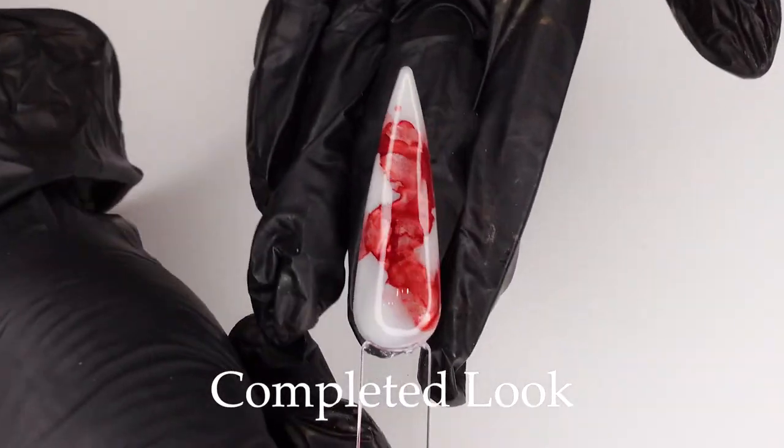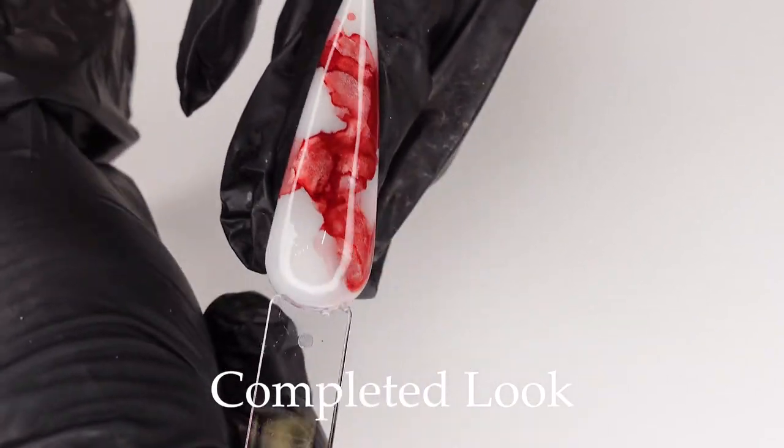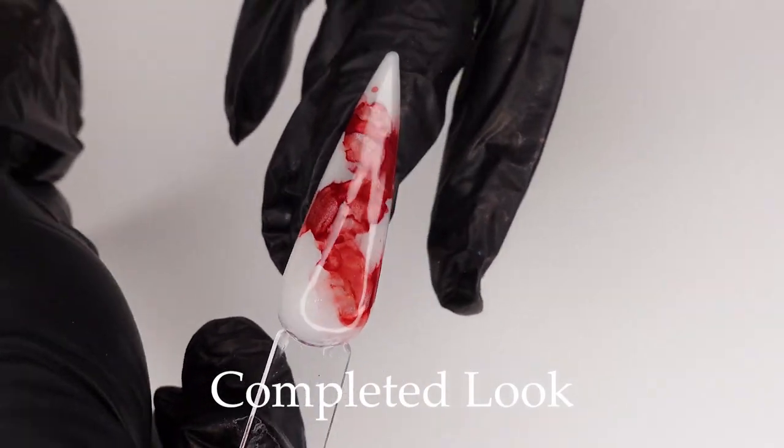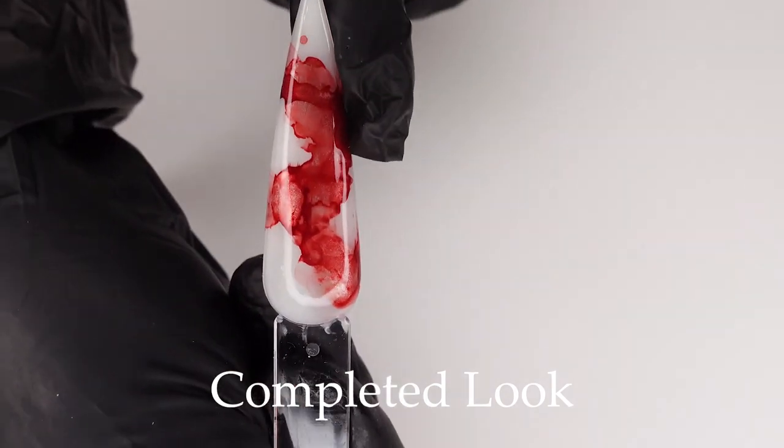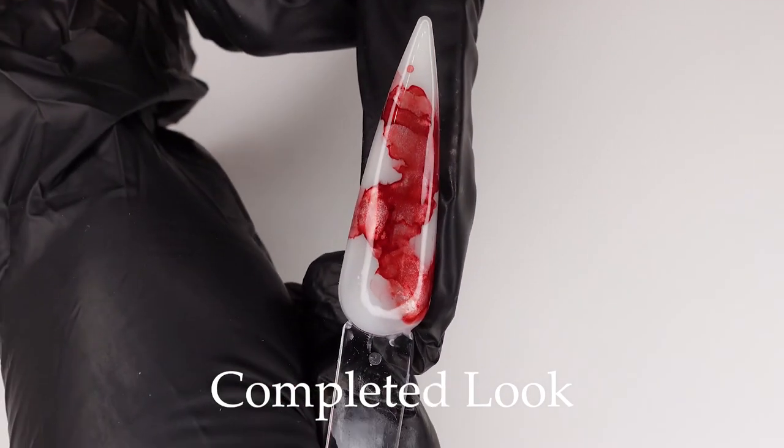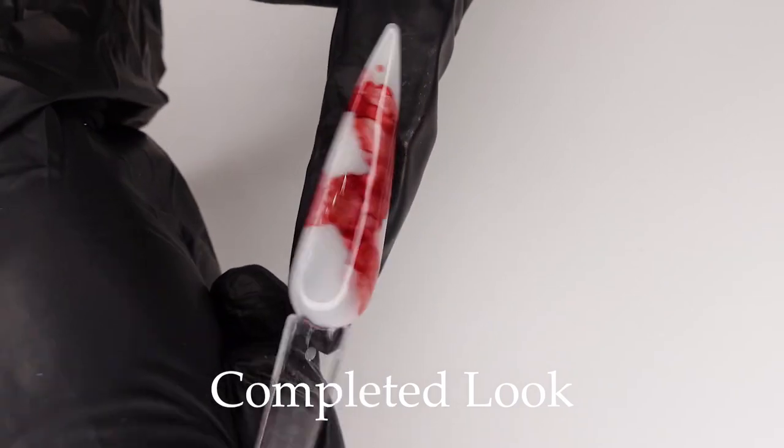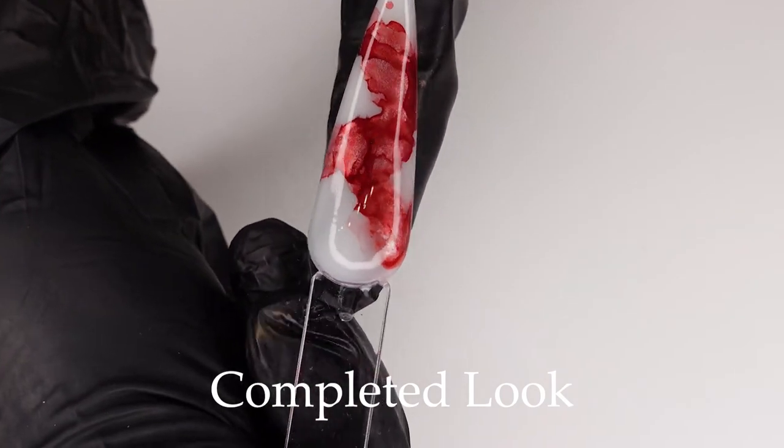And that is why we call it the bleeding ink because it gives that bleeding ink effect. And it has a metallic in it, which is super pretty. So that's what it looks like with the top coat. So now you get an idea.